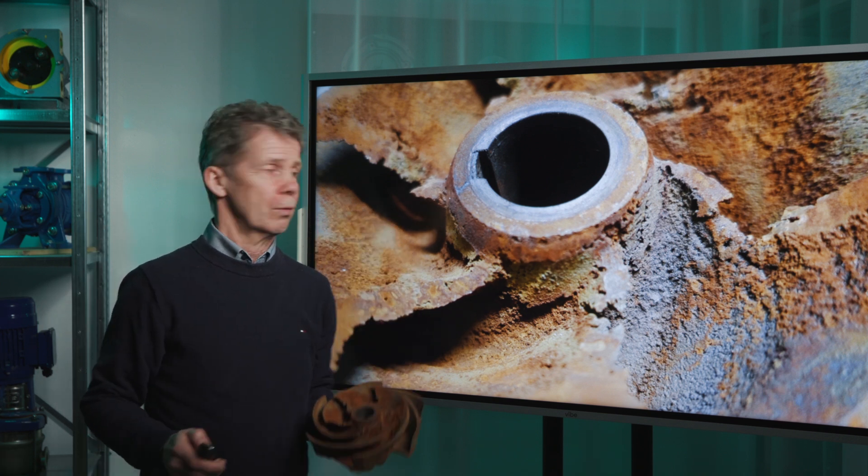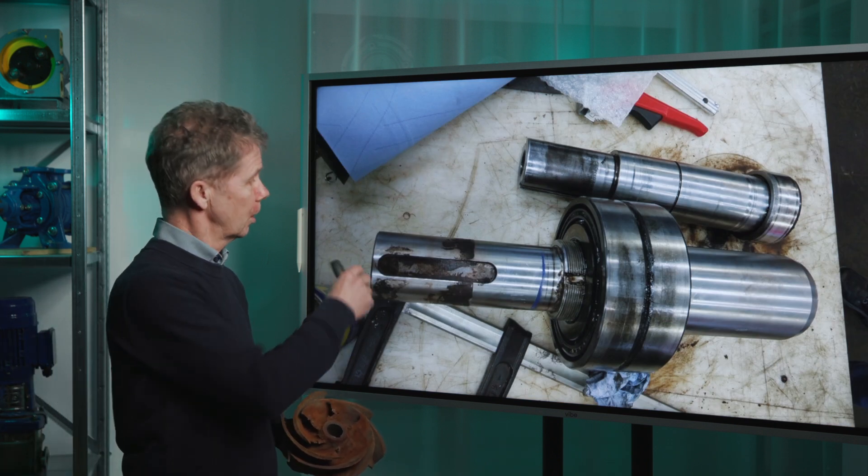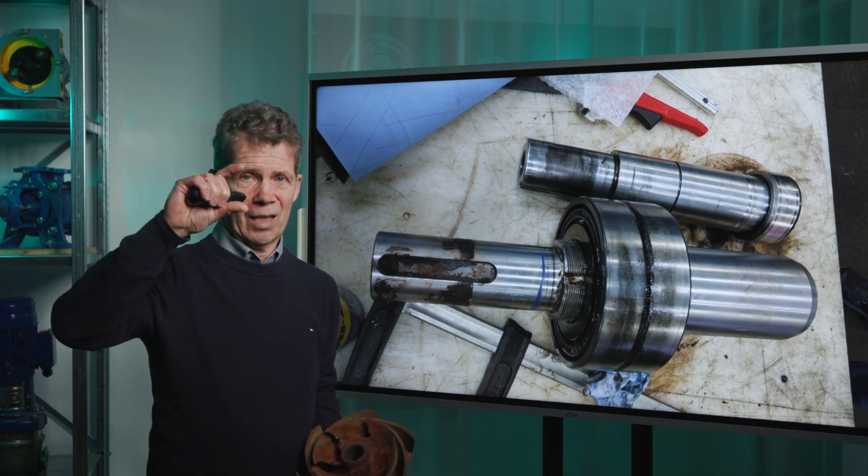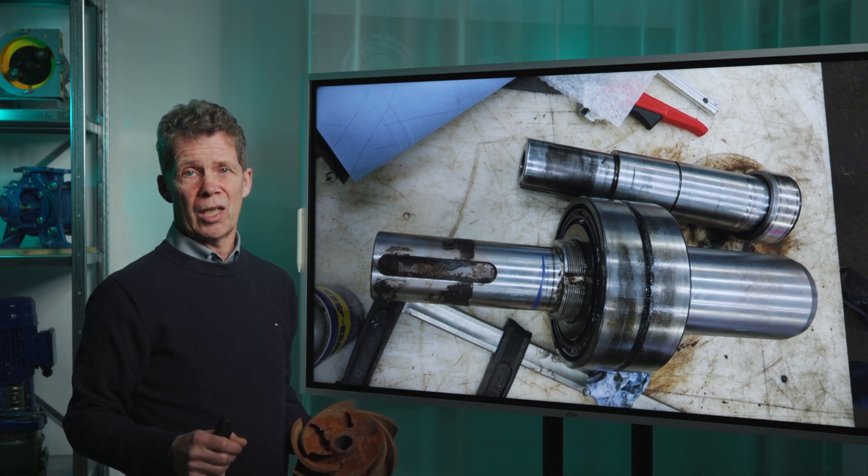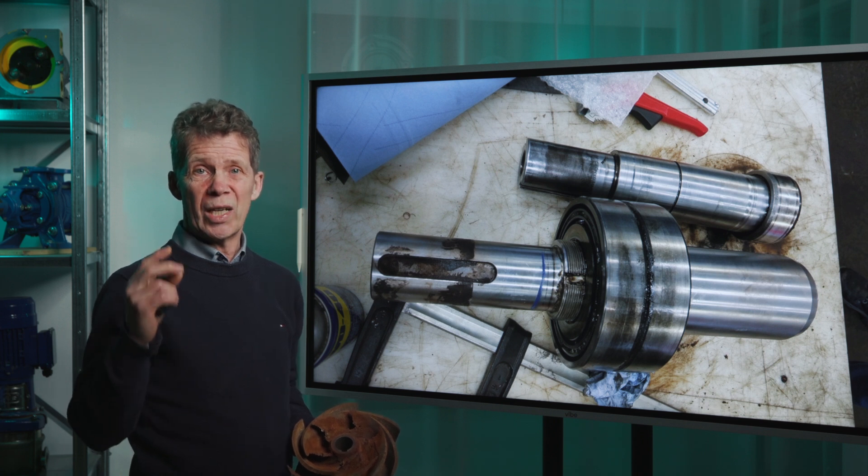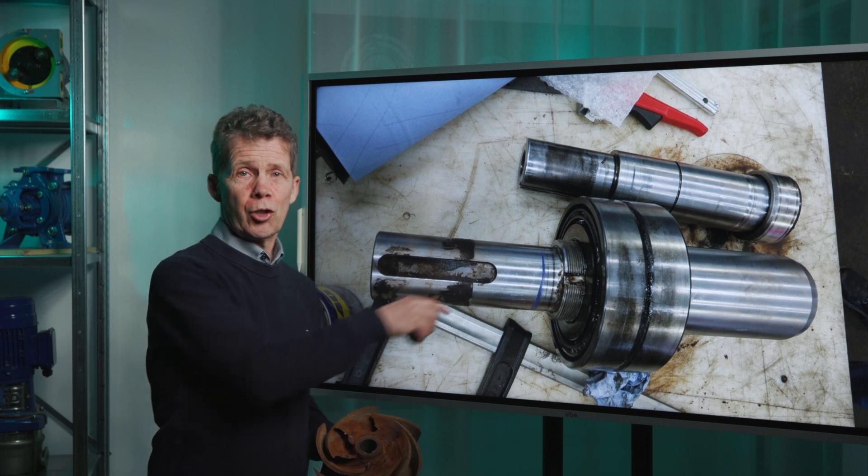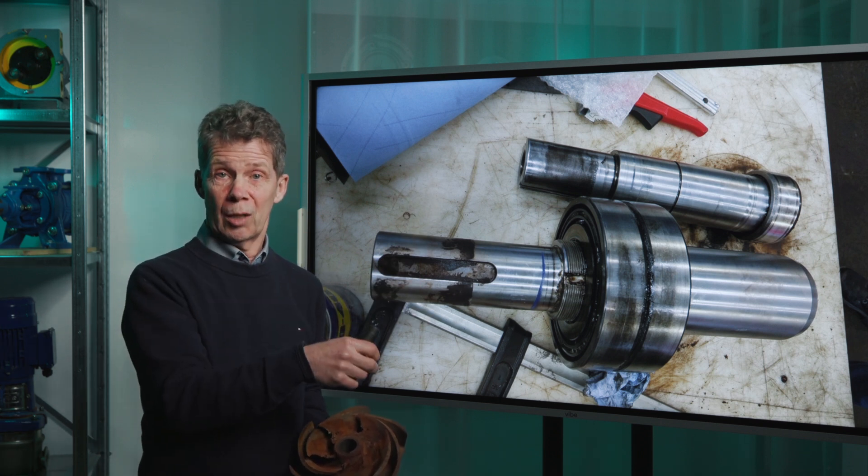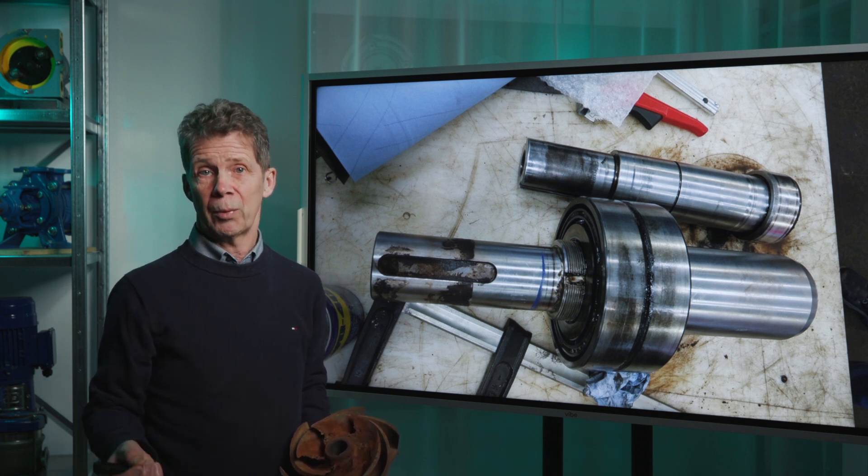Then I have another picture. Maybe this will convince you more. Here you see a pump shaft. This diameter it is. And there are two pumps in that installation. And both pumps had the same damage within five months of operation. Both shafts were broken. Just because the NPSH available value isn't higher than the NPSH required value of the pump.